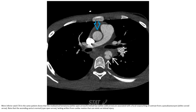An axial CTA in the same patient better shows the periaortic hematoma and clearly identifies the linear filling defect within the aorta from an intimal tear. Note that the axial CTA also shows the mediastinal hematoma and intimal tear associated with outpouching of contrast from a pseudoaneurysm. Note that the ascending aorta is normal, lacking blurring from cardiac motion that can limit evaluation of intimal injury.